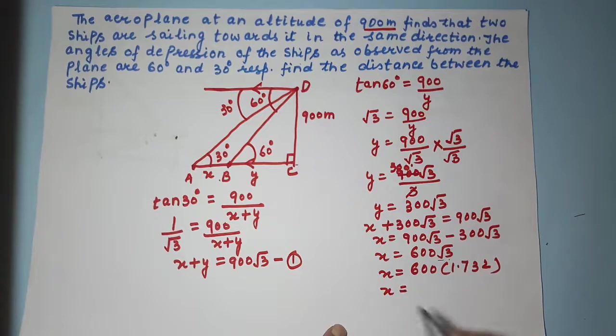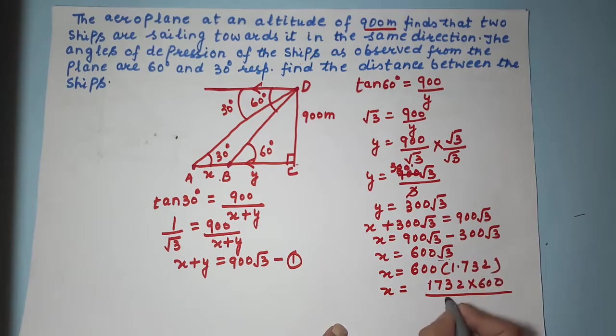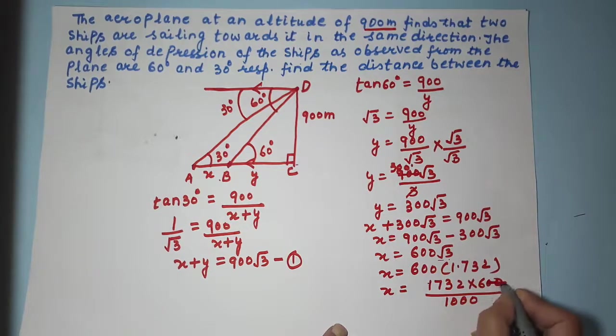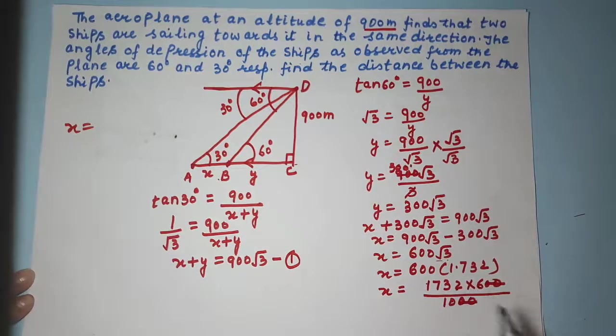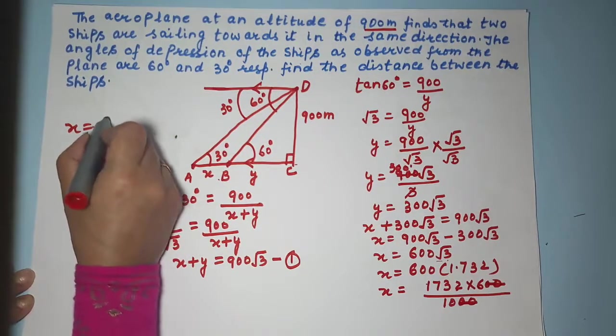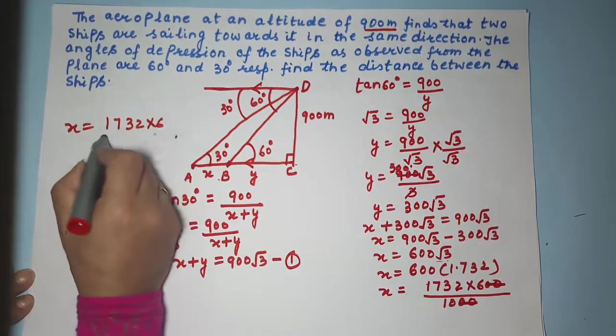So X is equal to, let's multiply. So 6 into 2's up. Let's do it like this. 1.732 into 600 divided by how many zeros? 1000. So this and this will go. So my X is, let me write it here again. 1.732 into 6 divided by 10.